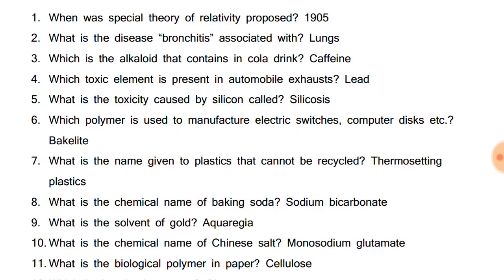When was the special theory of relativity proposed? It was proposed in 1905 by Albert Einstein. What is the disease bronchitis associated with? It is associated with lungs.